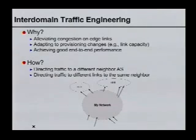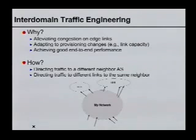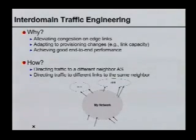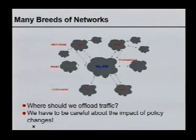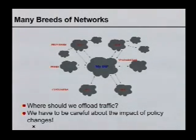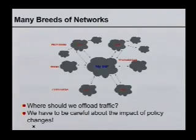When sloshing traffic around, there are really two main options: you could shift traffic among the links to a single AS, or shift traffic among all your links, maybe to a different AS. When doing so, you have to pay attention to where you're sloshing traffic to, because you don't want to violate commercial constraints. You don't want to take traffic off a congested peering link and end up sending it through one of your customers.